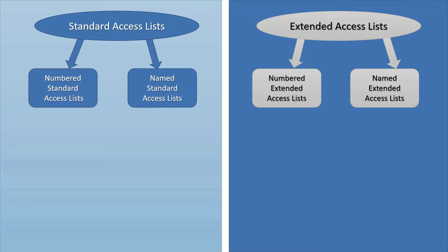A standard access list can be either a numbered standard list or a named standard access list. Similarly, you can have a numbered extended access list or a named extended list. Beginning with iOS version 12.3, Cisco introduced a new feature to edit existing ACLs, called the Sequence Editing feature. You can further classify ACLs based on this feature.